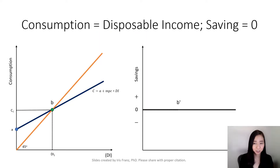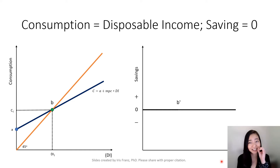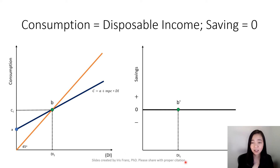Recall that at the intersection between the 45-degree line and our consumption schedule, our disposable income is exactly equal to our consumption. Therefore, if you are spending your entire disposable income, your saving is zero. On the right-hand side, we have our savings schedule. So if your disposable income is DI1 and you spend the entire paycheck, your saving is exactly zero.